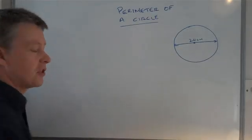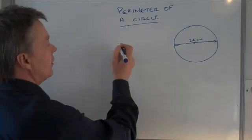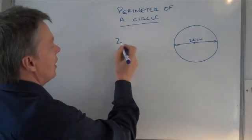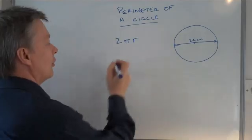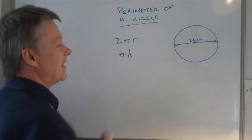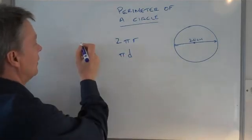The formula that we use, there's two ways it's presented. It's either presented to you as something like this, 2 pi r, or it's presented to you as pi d. They both mean exactly the same.